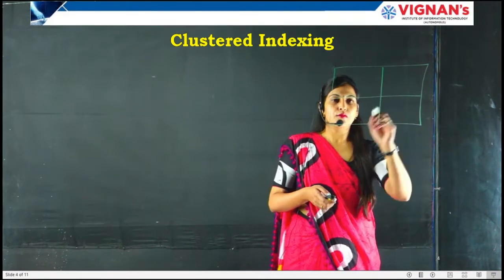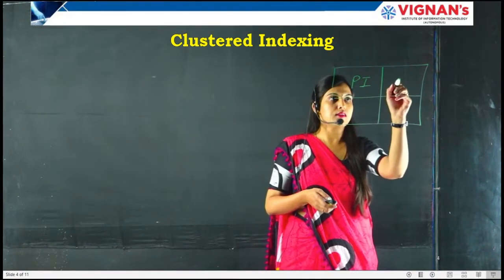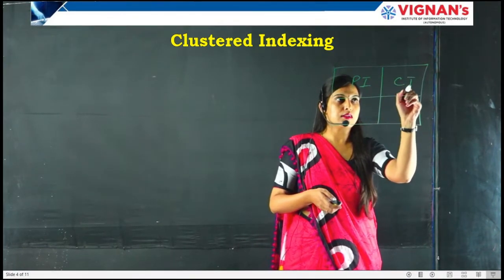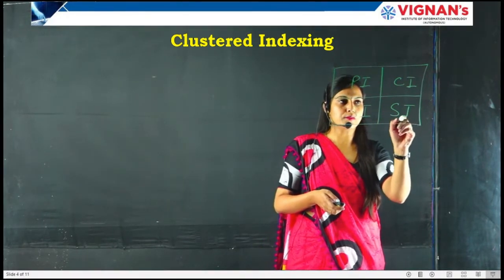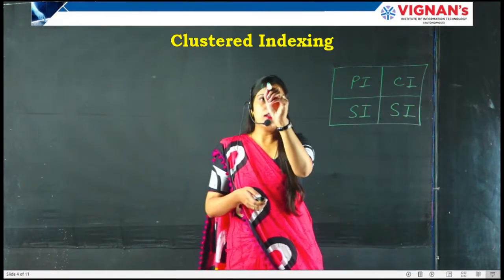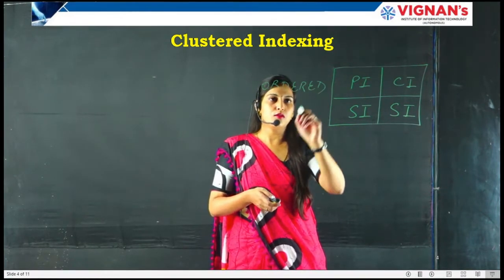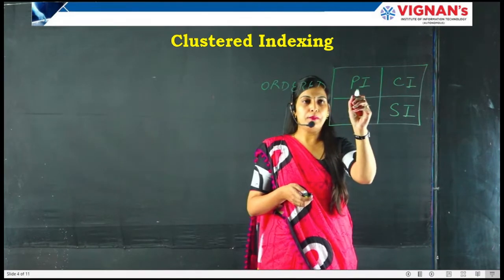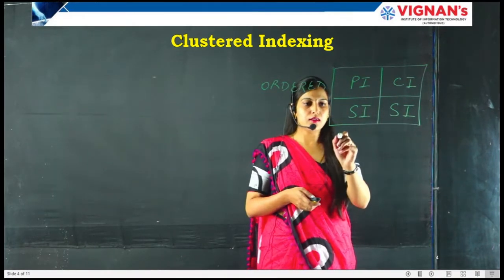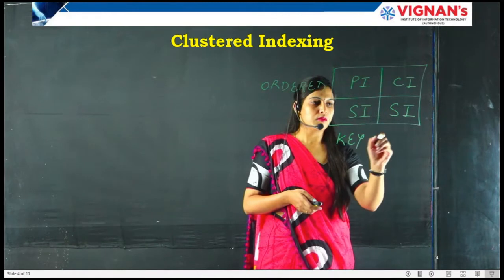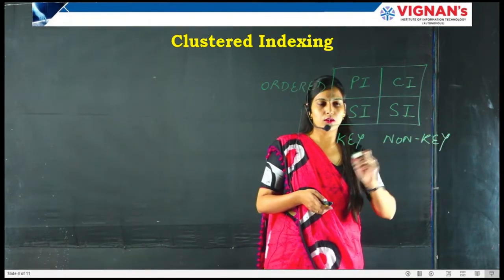We have three types of indexing: primary indexing, clustered indexing, and secondary indexing. When the data is ordered or sorted, we can define primary indexing and clustered indexing. And if the data is key and non-key, that also determines which type of index applies.